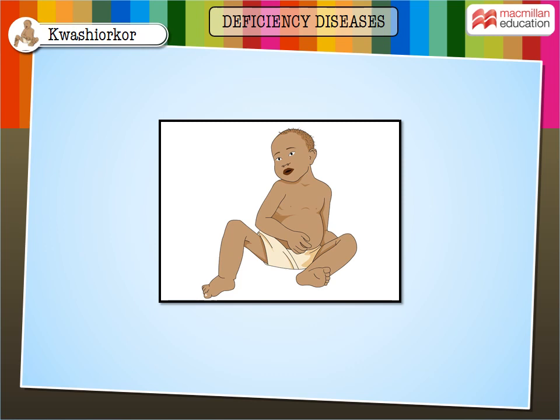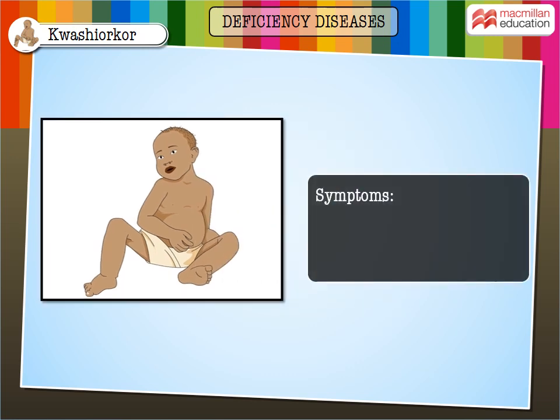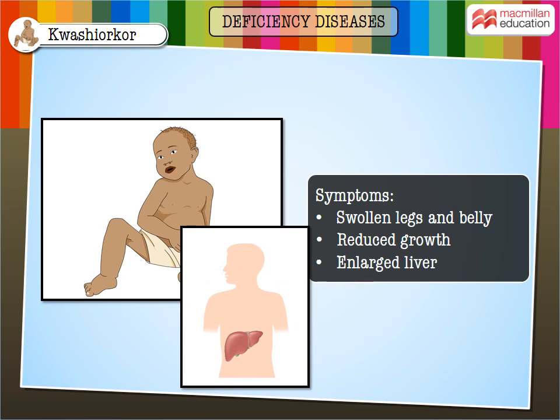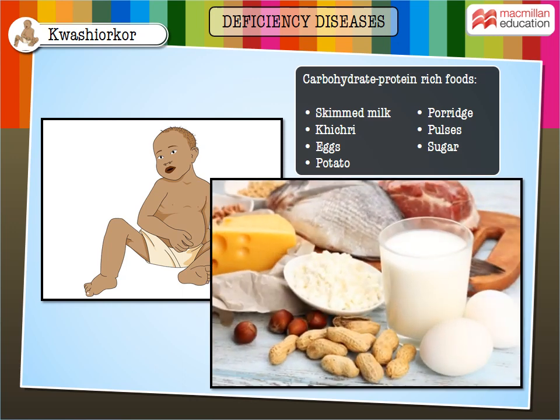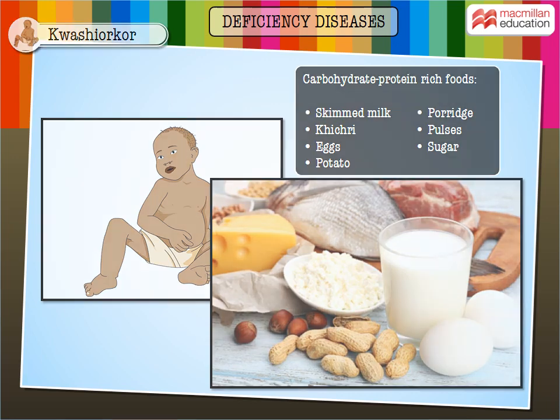The child in this picture is suffering from yet another protein-carbohydrate deficiency disease called kwashiorkor. Affected children have a large belly that sticks out, their growth is reduced, and an enlarged liver may also be noticed. Children suffering from kwashiorkor should be given skimmed milk, porridge, dalya, kitchari, pulses, eggs, sugar, and potato, which are excellent sources of carbohydrates and proteins.